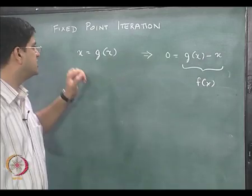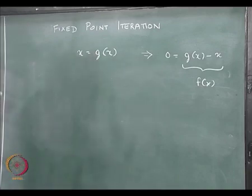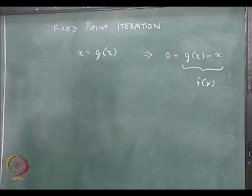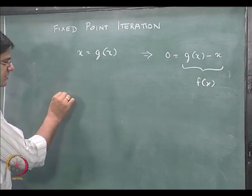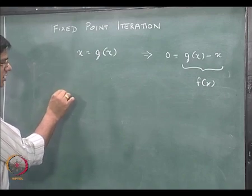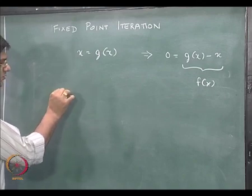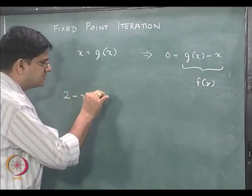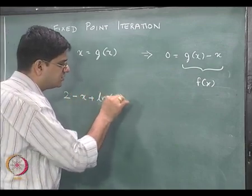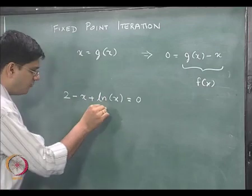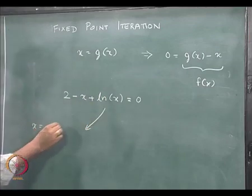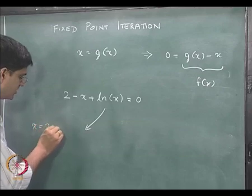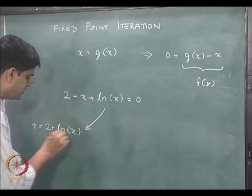The question is whether x equal to g of x is going to be unique, and the answer is no. Looking at the example we have been considering in this module: 2 minus x plus ln of x equal to 0.